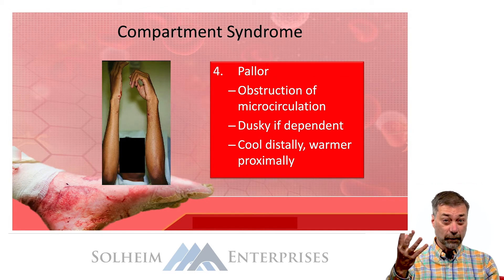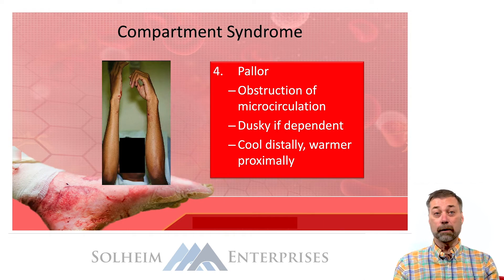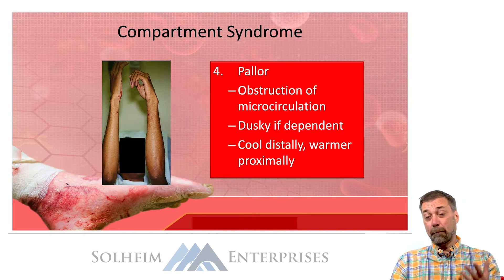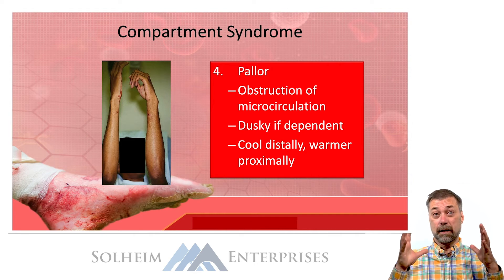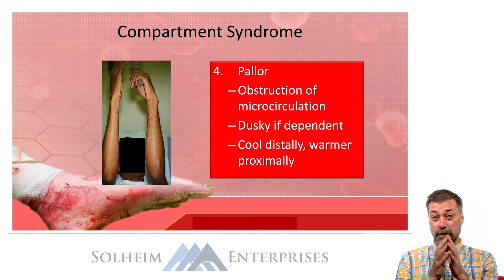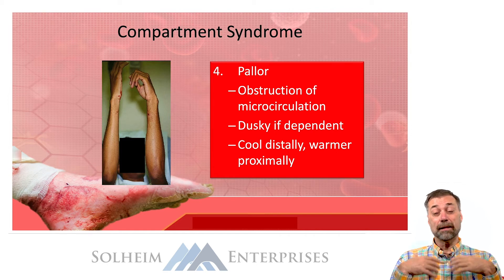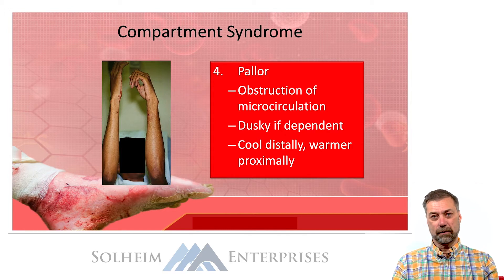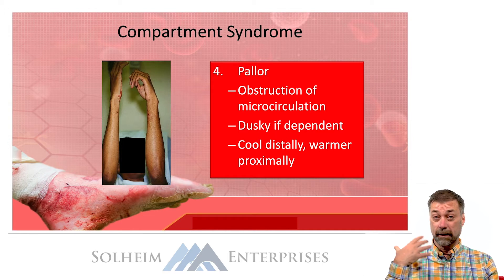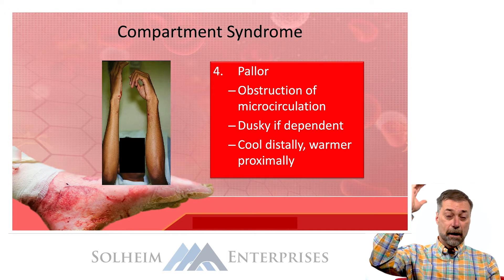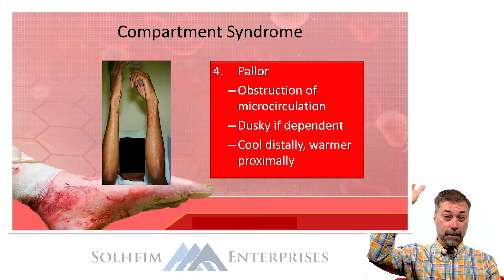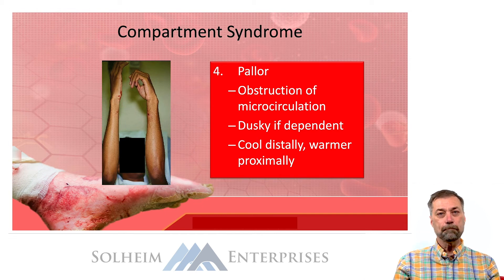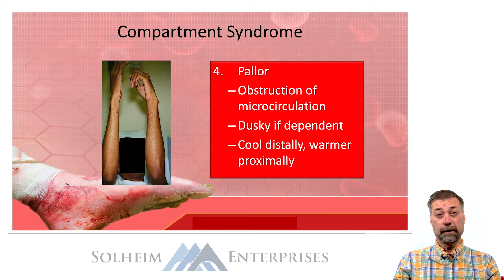An even later and more serious finding, which often has a poor outcome, is pallor — the fourth P. Pallor would indicate an obstruction in the arterial circulation, decreasing oxygen delivery. In that case, the tissue in the distal end may not survive, which is why this is considered a very late and often terminal finding. If the limb is elevated it will tend to be pale; if the limb is hanging, it'll tend to be dusky.